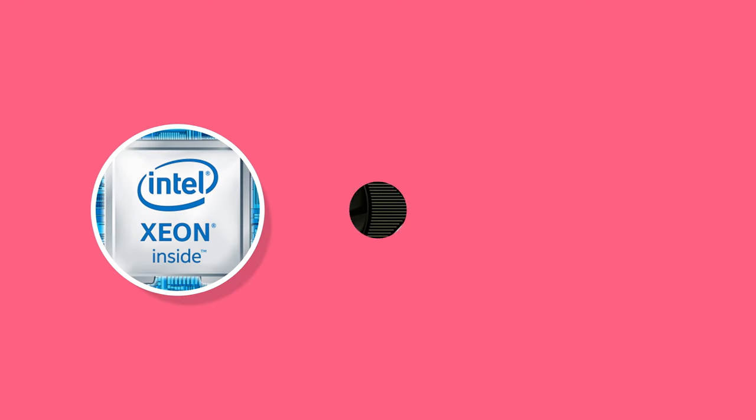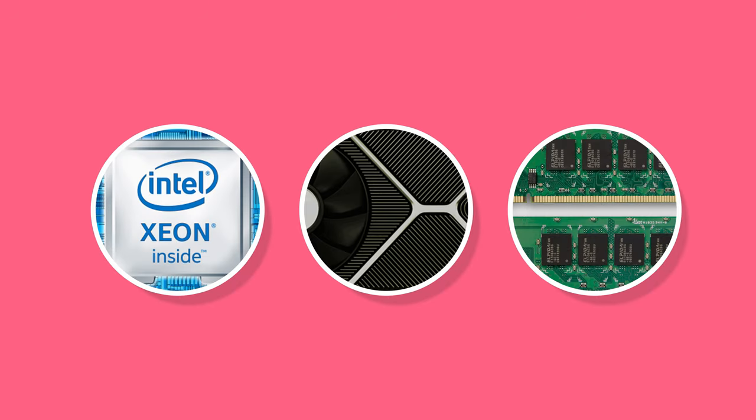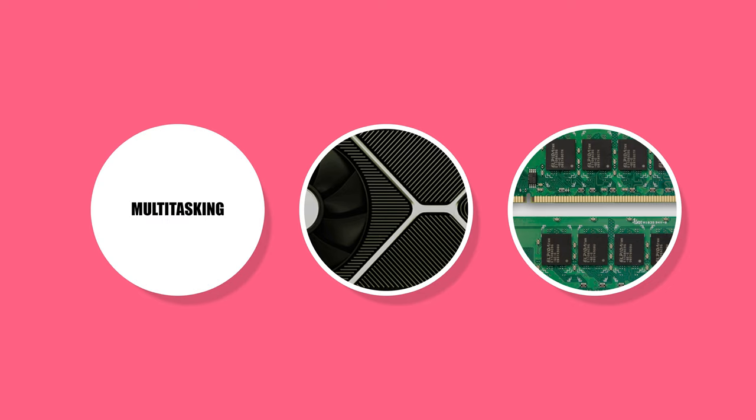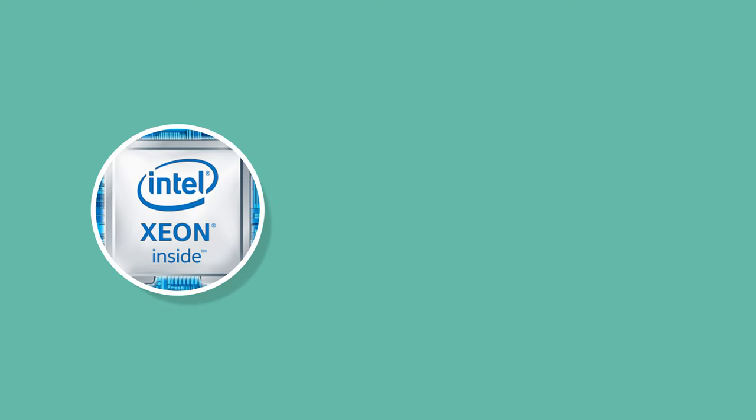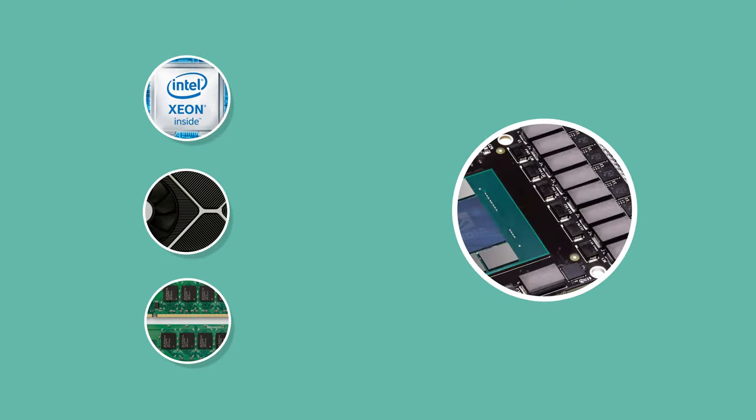Before we get into all the technical specs, you need to know three main components found in all computers: a CPU, a GPU, and RAM. The CPU — the central processing unit — is like the brain of your computer. It's what allows you to multitask. When we're talking about multi-app workflows, the CPU matters, but so does RAM and the VRAM on your GPU. All of these working together help enable multi-app workflows.